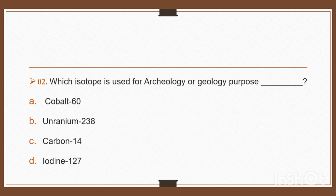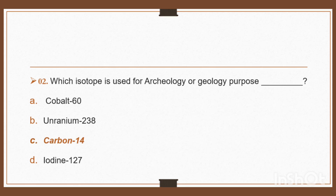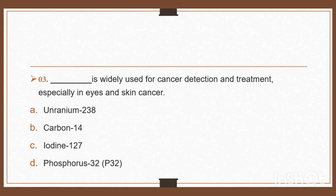Question 2: Which isotope is used for archaeology or geology purpose? Option A: cobalt-60, option B: uranium-238, option C: carbon-14, option D: iodine-127. Carbon-14 isotope is used for archaeology or geology purpose. Right, option C: carbon-14.